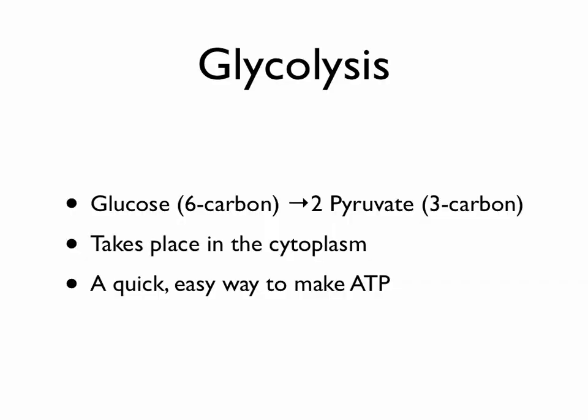Glycolysis is a simple process. It happens when special enzymes take glucose and break it into two molecules of pyruvate. Glucose is a six-carbon molecule, and each molecule of pyruvate is three carbons long. This happens in the cytoplasm, and it's a very quick, easy way to make some ATP.